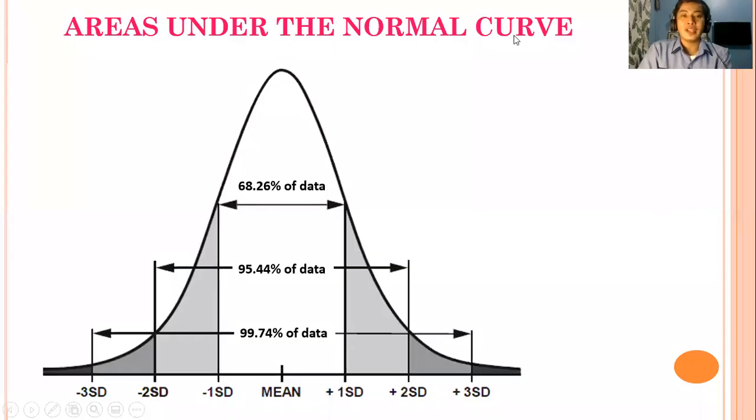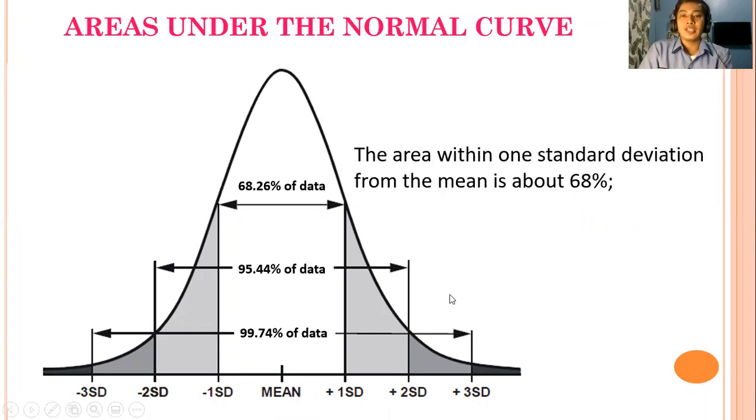So these are the areas under the standard normal curve with mean on the center and one standard deviation each. Notice that the area within one standard deviation from the mean is about 68%, or it's exactly 68.26% of the data.